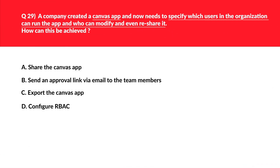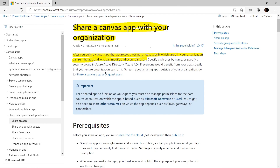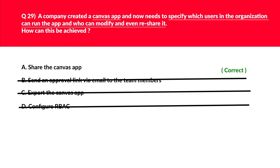This question is related to Canvas apps. Just like social media — when you create or share a post, there are options to make it public or visible only to a group of people. Similarly, in a Canvas app you can share the app and specify which users can do what. Hence, we'll reject options B, C, and D. The official documentation confirms: after you build a Canvas app, you specify which users in your organization can run the app and who can modify or reshare it. We'll log this as the correct answer.